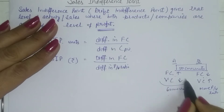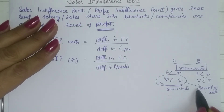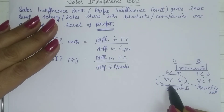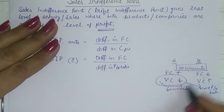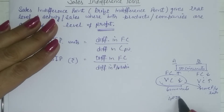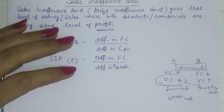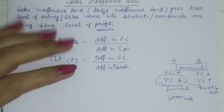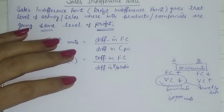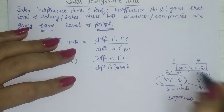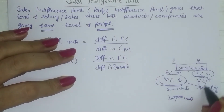Lower variable cost means higher PV ratio, so you should choose that method. But if your sales are below SIP — say 40,000 units — you are not at the same profitability level; profit will be lesser. So you should choose a method which puts a lesser burden in terms of fixed cost — the method with lower fixed cost.